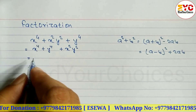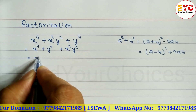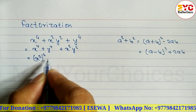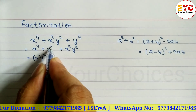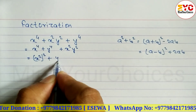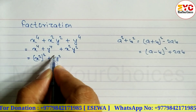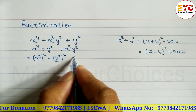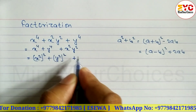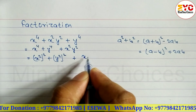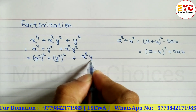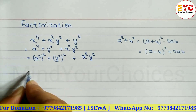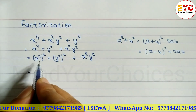Convert the two terms into the form of a² + b². We can write x⁴ as (x²)², and y⁴ as (y²)² — since two times two gives four. The last term remains x²y² as it is.